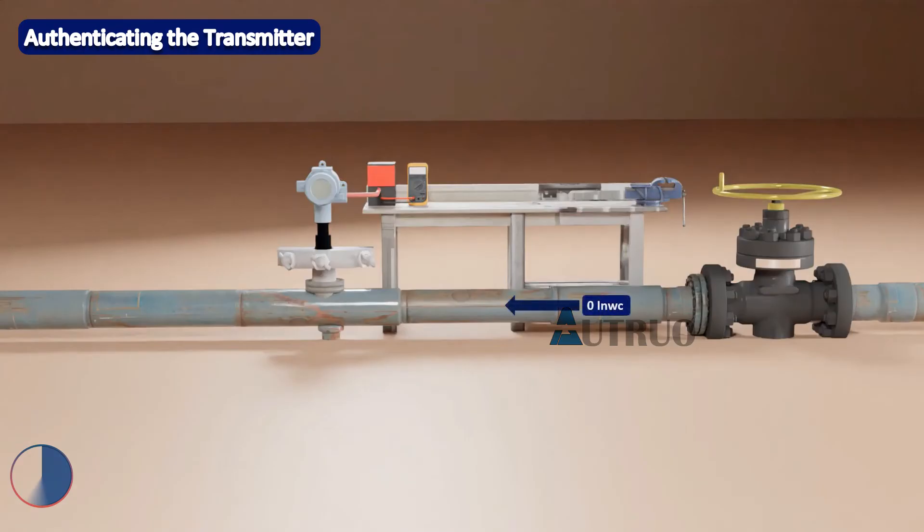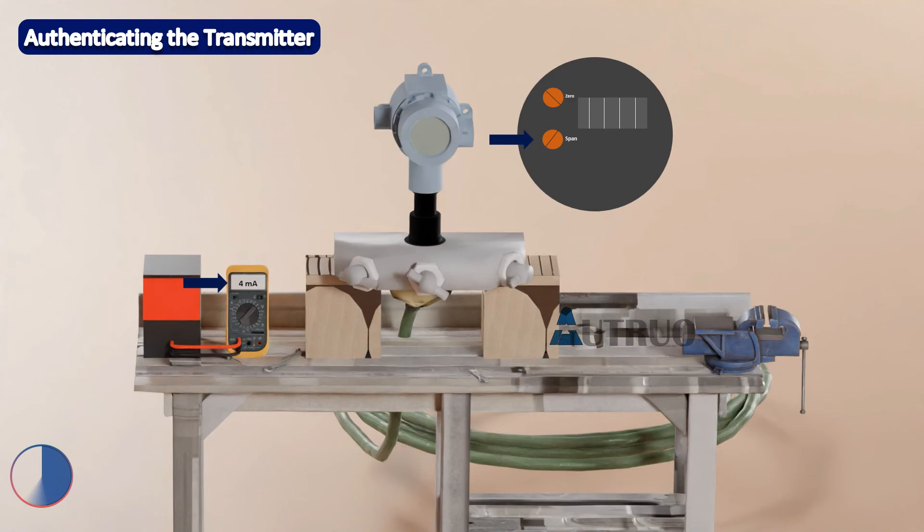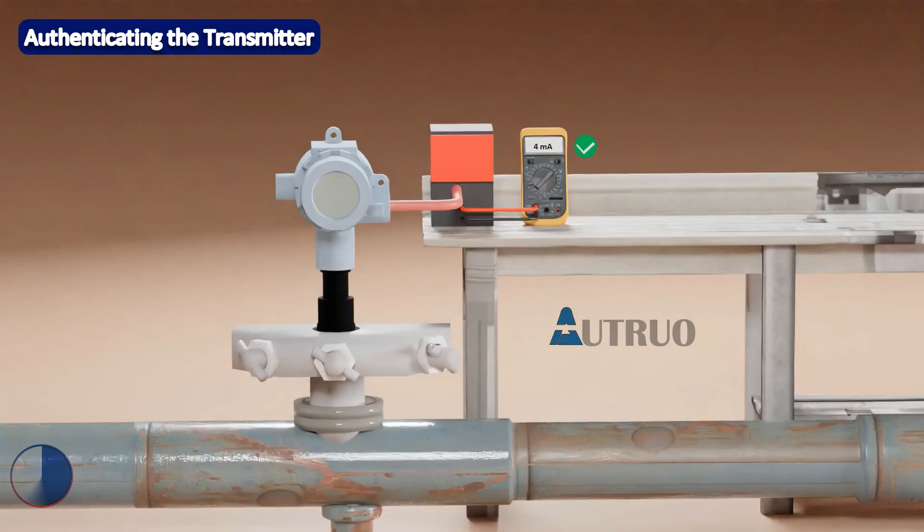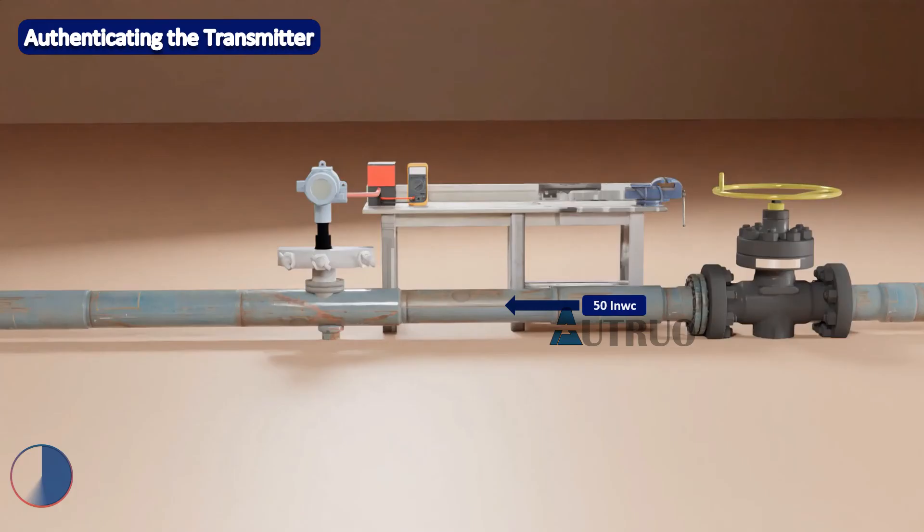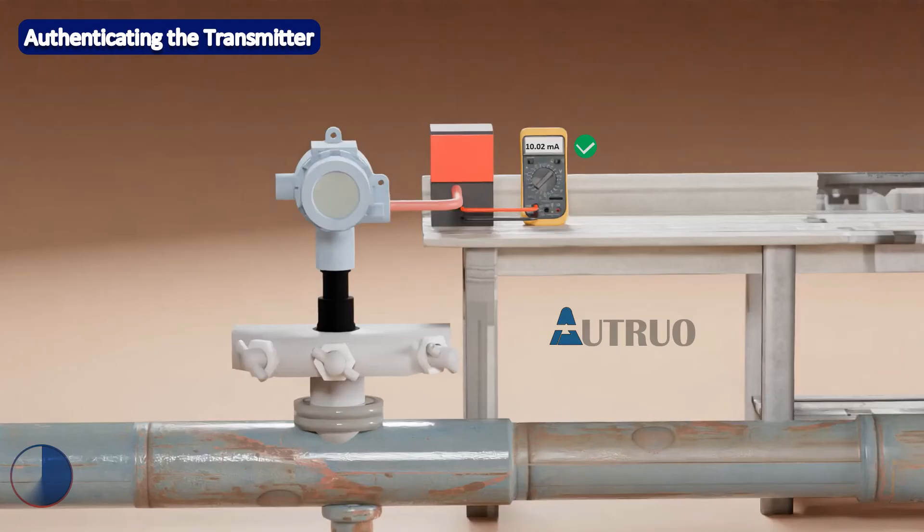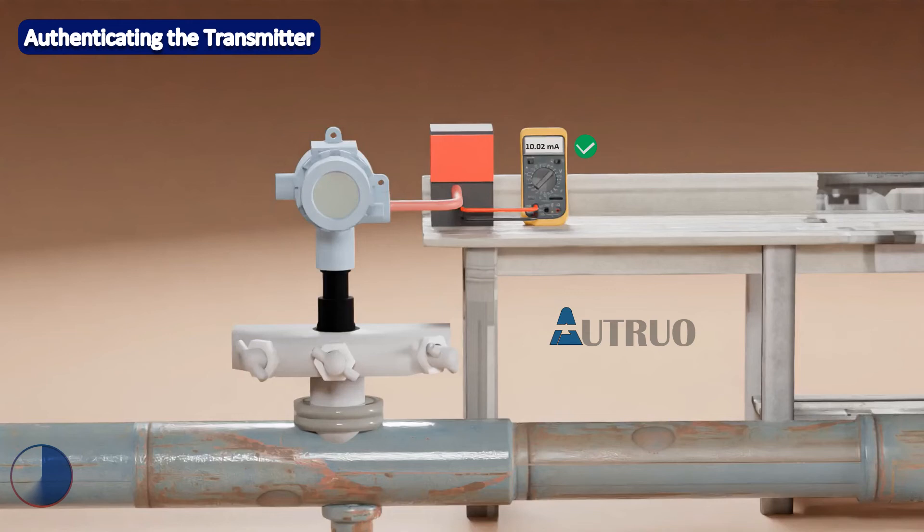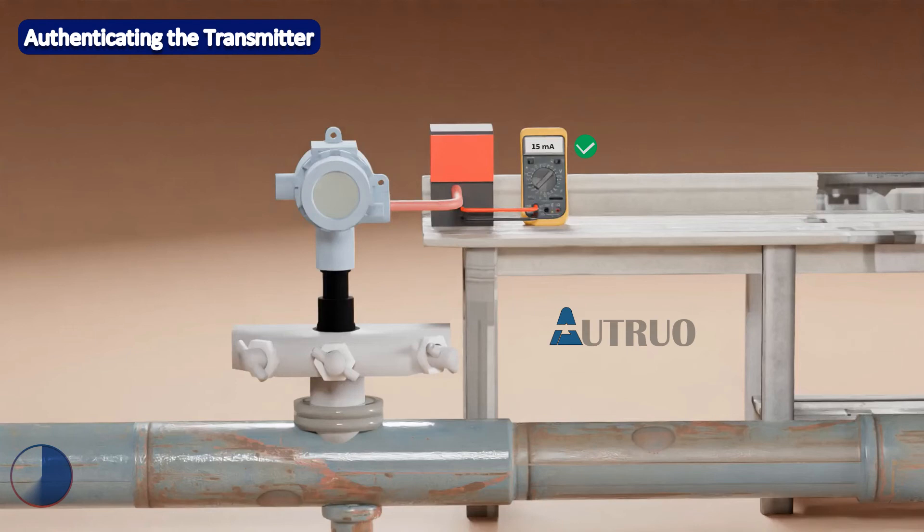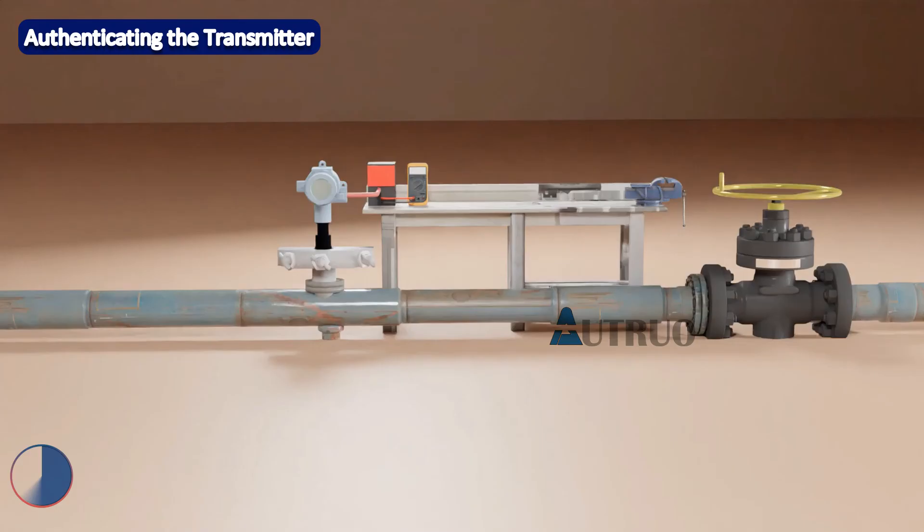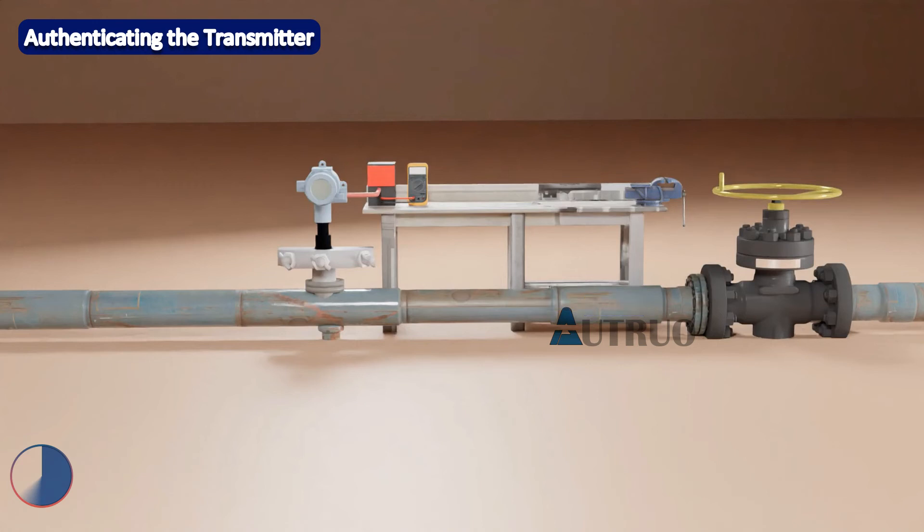Now when there is no liquid flow, the current gotten is 4 milliampere. When the valve is open halfway, which is to allow 50 inch of water column to flow, the current gotten is 10.02 milliampere. Again, when the valve is further opened slightly, that is when 75 inch of water column is allowed to flow within the pipe, the current gotten is 15 milliampere. Finally when the water inlet valve is open to its maximum, that is to allow 100 inch of water column to flow within the pipe, the current gotten is 20 milliampere.